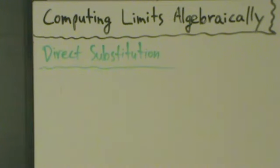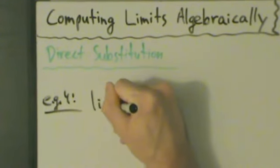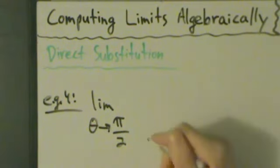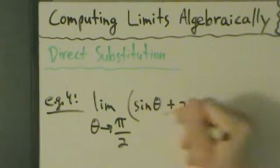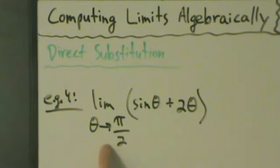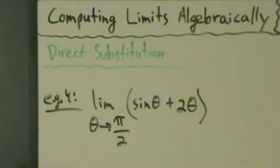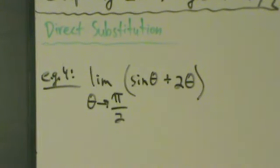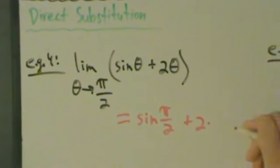Let's do some trig now. Example 4: the limit as theta approaches pi over 2 of (sine of theta plus 2 theta). We need the parentheses around all of this because we're taking the limit of this whole expression with the addition. So again, direct substitution — we're just going to take all of our thetas and replace them with pi over 2. The fact that it's trig doesn't matter at all, it's still just direct substitution. So this is going to equal sine of (pi over 2) plus 2 times (pi over 2).